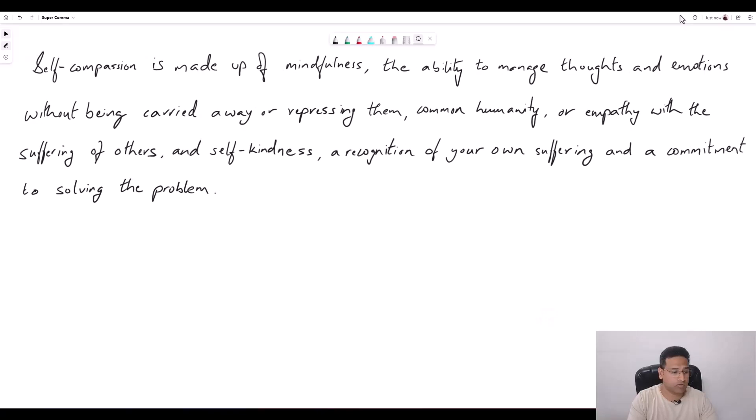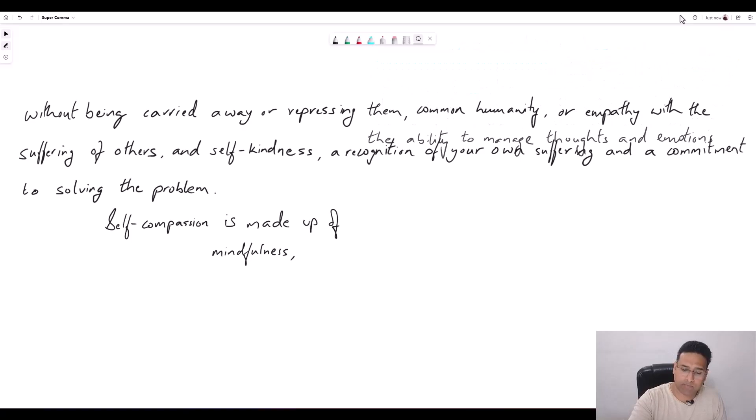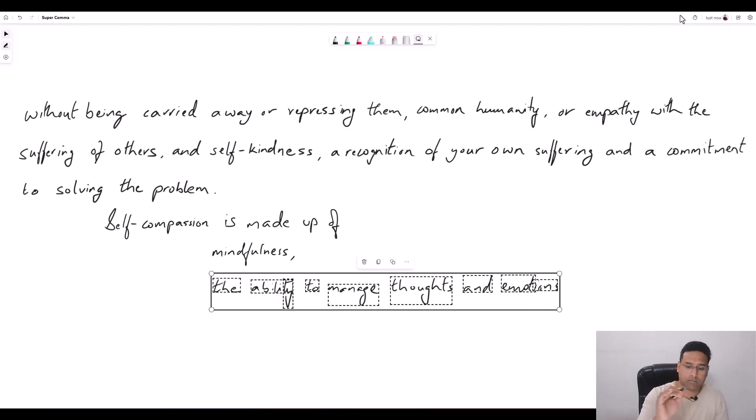We're going to use sentence structure analysis to make sense of the sentence. Let's get cracking. Self-compassion is made up of. What is self-compassion made up of? First, mindfulness. So this is the name of a trait. Let's call this the first entity. The second entity is the ability to manage thoughts and emotions. This looks like the second entity. But let's hold on a little bit.